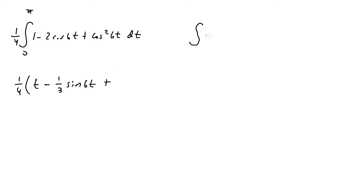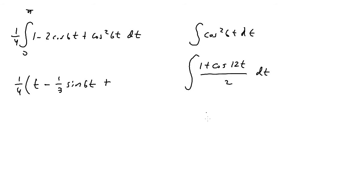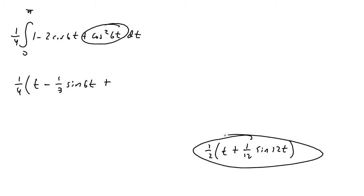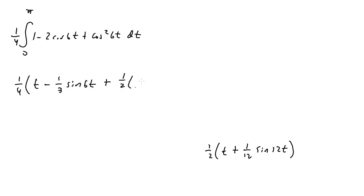For the integral of cosine squared of six t, I use the half-angle formula again. Cosine squared of six t equals one plus cosine of twelve t over two. Taking one half outside: one half times the integral of one plus cosine of twelve t, dt. Evaluating: t plus one over twelve sine of twelve t. So the integral of cosine squared six t is one half times t plus one over twelve sine of twelve t.